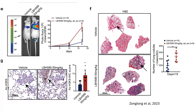Panel F provides H&E stained lung tissue sections from the same mice. LBH589-treated mice have a notable increase in metastatic lung nodules, as indicated by the arrows in the images and the quantification on the right. This histological evidence supports the conclusion that LBH589 promotes metastatic spread to the lungs.